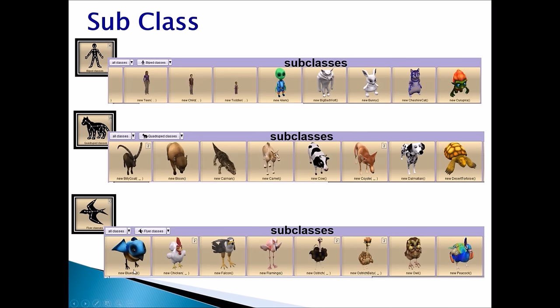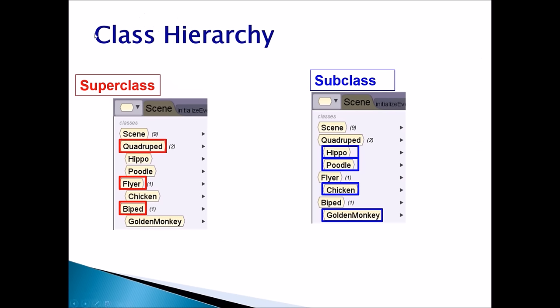We have bluebird, chicken, falcon, flamingo, ostrich, owl, peacock as subclasses. You have been using these subclasses in your Alice program.